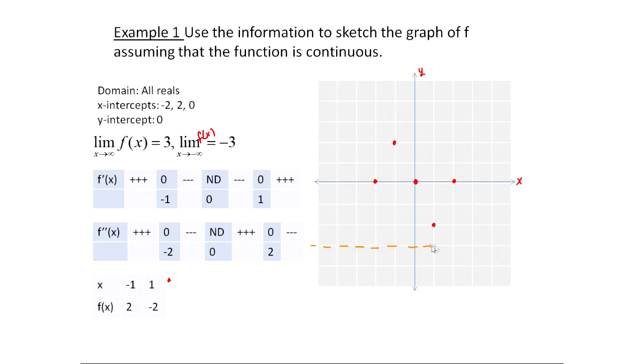And I can say, okay, as my graph is coming out this way or as x goes this way, my graph is going to be coming down towards this most likely. Because usually I think of asymptotes like magnets, they pull the graph that way. And then here, as x goes to positive infinity, the limit of f of x is three.